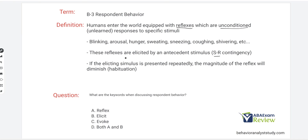For example, if I shine a light in your eyes, initially you might blink, but if I keep doing it, that rapid blinking might slow. If you hear a loud clap of thunder, you might jump really high, but if you hear many claps of thunder in a row, the magnitude of that jumping is going to diminish — that is habituation. What you want to remember about respondent behavior is we are dealing with reflexes that are elicited. When we get to operant behavior, we're dealing with responses that are evoked. That is a very important distinction.